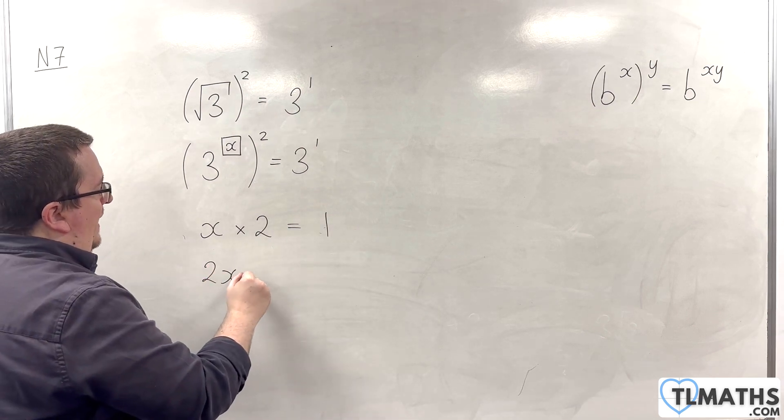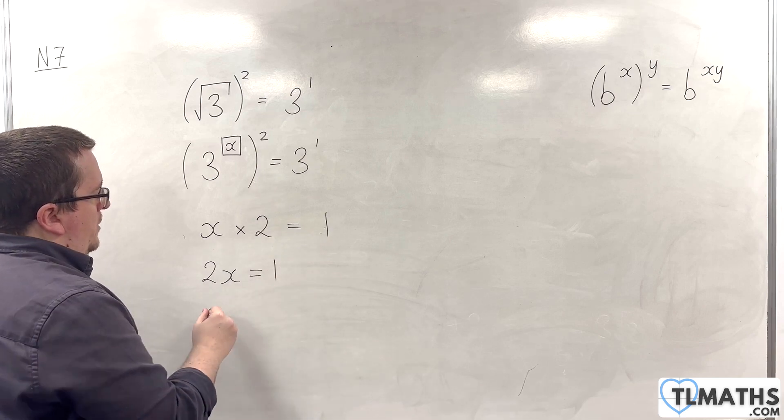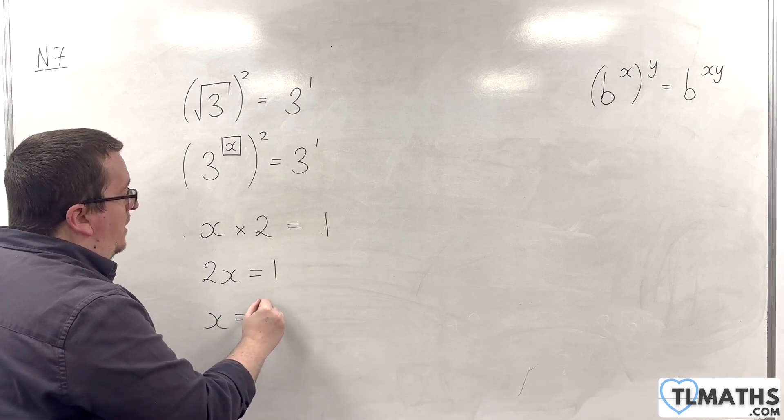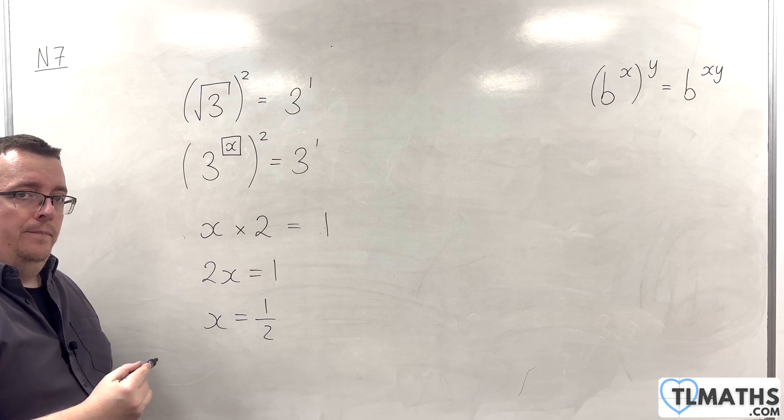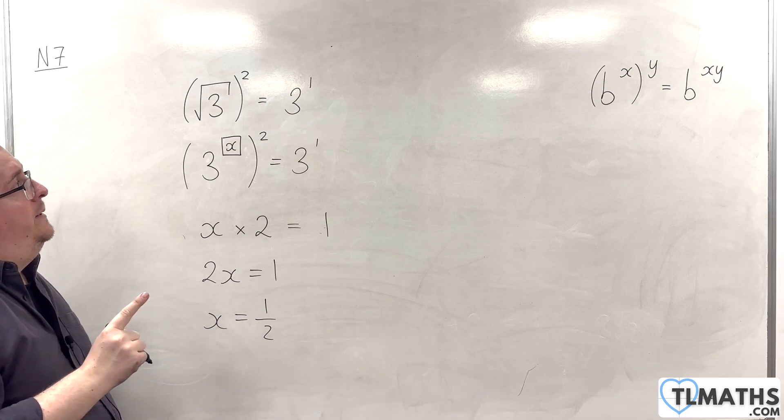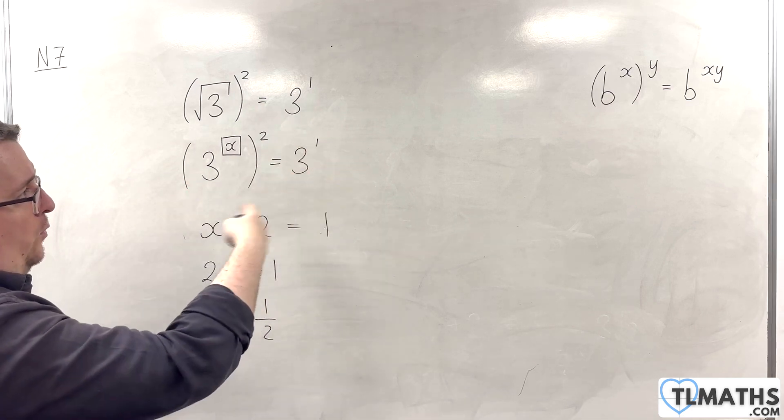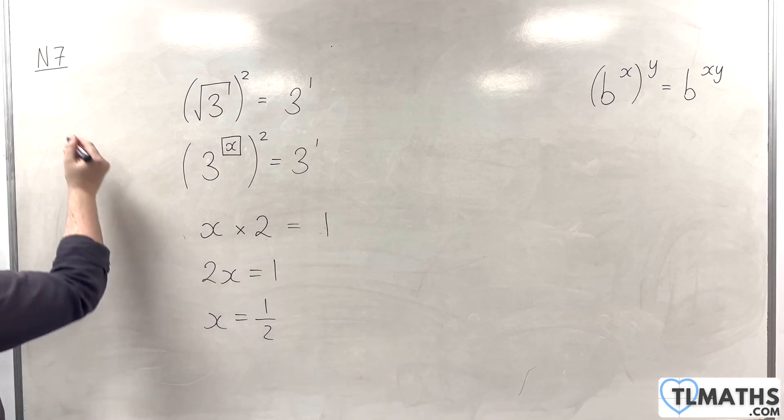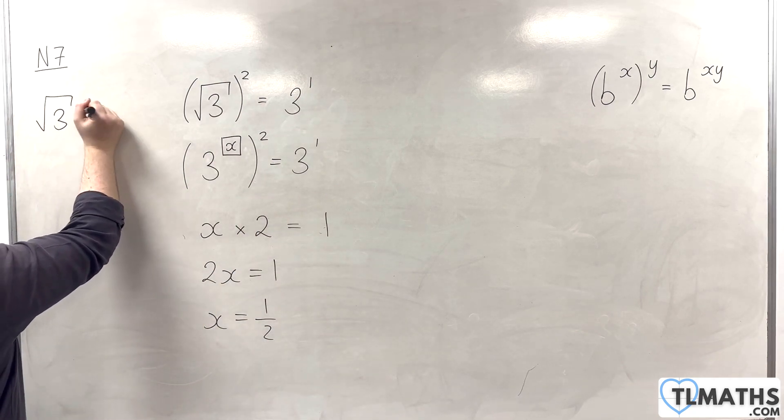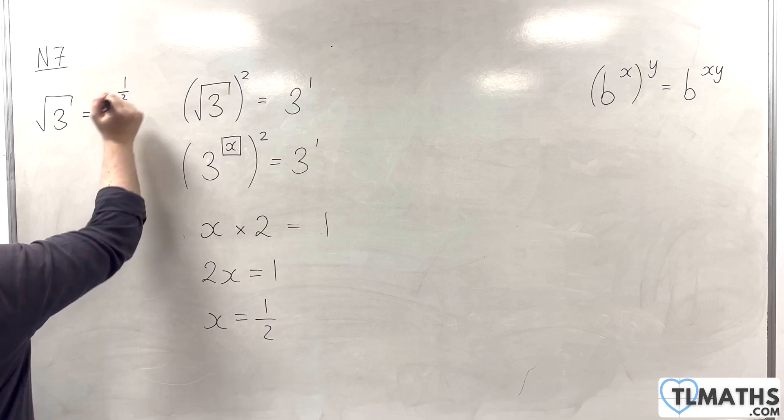So, 2x has to be 1. So, x has to be 1 half. So, what this is telling me is that in order for all of this to really work, root 3 is the same as 3 to the half.